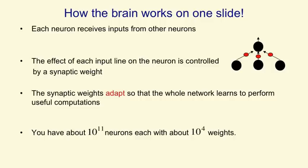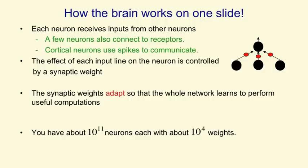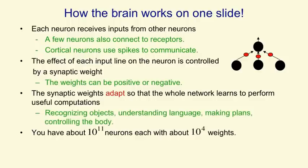So, all on one slide, this is how the brain works. Each neuron receives inputs from other neurons; a few of the neurons receive inputs from the receptors — a large number of neurons, but only a small fraction of them. The neurons communicate with each other in the cortex by sending these spikes of activity. The effect of an input line on a neuron is controlled by a synaptic weight, which can be positive or negative. These synaptic weights adapt, and by adapting these weights the whole network learns to perform different kinds of computation — for example, recognizing objects, understanding language, making plans, and controlling the movements of your body.